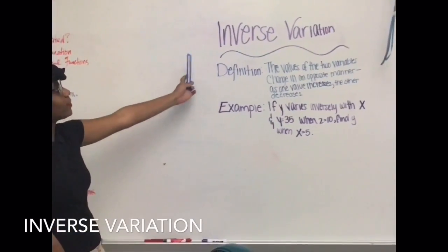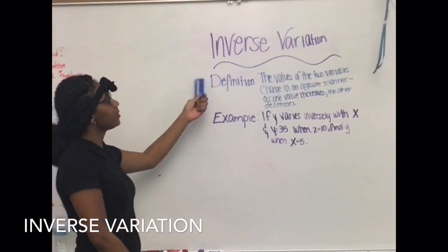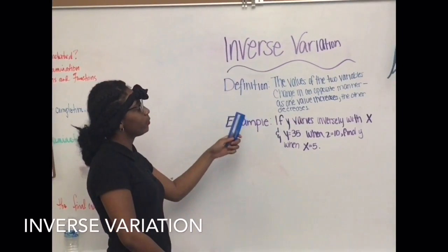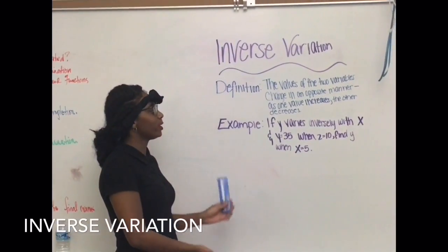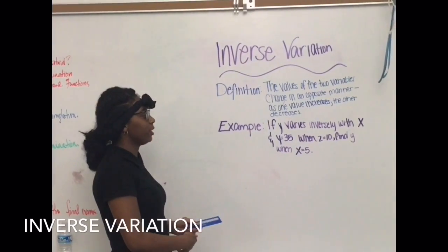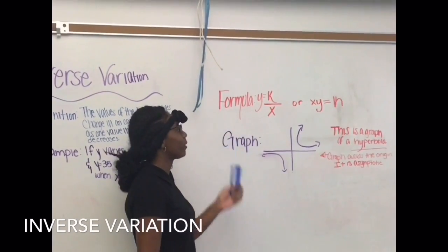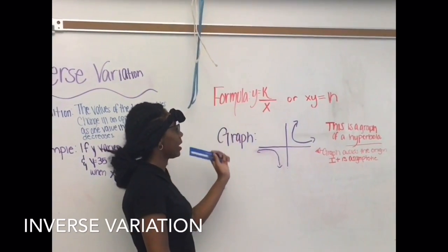Okay, this is inverse variation. The definition of inverse variation is the values of the two variables change in the opposite manner. As one value increases, the other decreases. The formula for inverse variation is y equals k over x, or xy equals k.